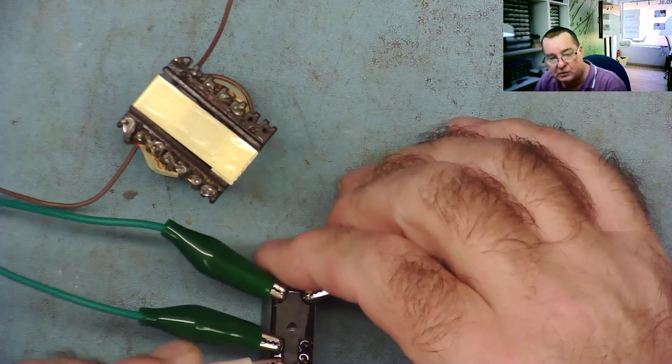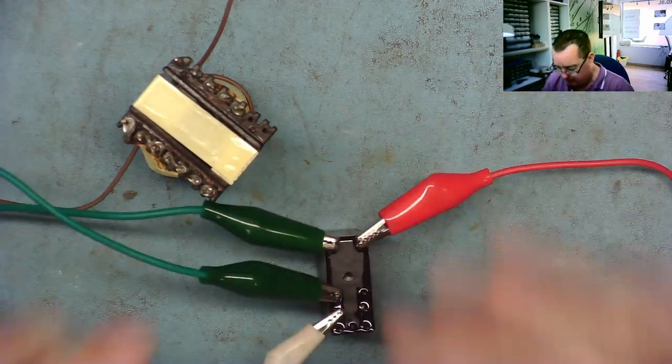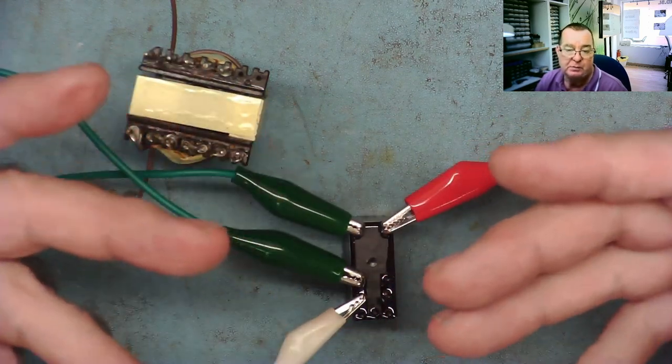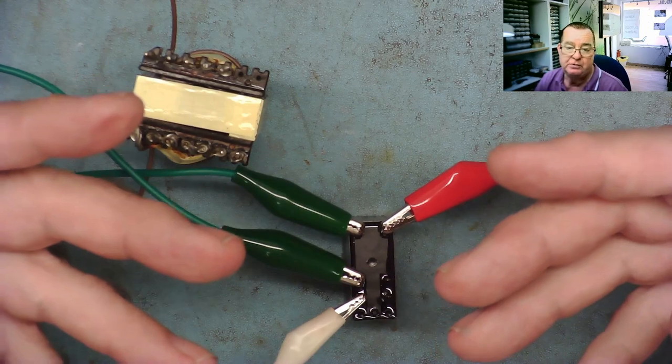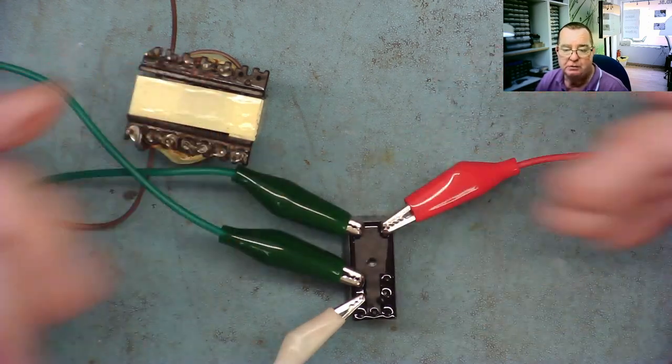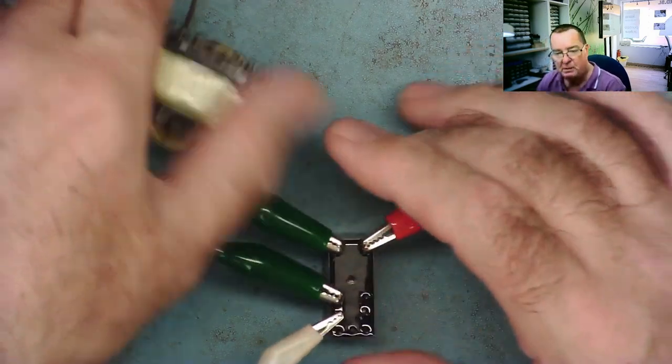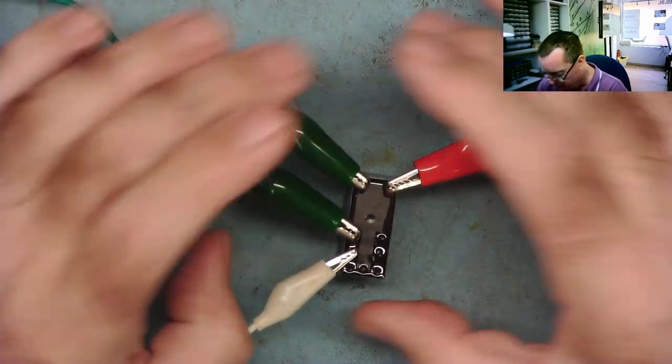The other end of the switch, we connect back to the power supply. So when we put the power on, the relay will open the switch. But once the switch is open, there's no power to the coil so it will close the switch, and then there'll be power to the coil so it'll open the switch. So this effectively should rattle backwards and forwards, making a loud buzzing noise.